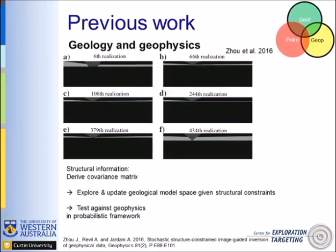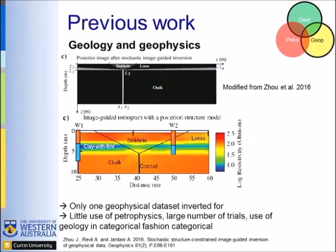Now these authors do consider geology. Zhu et al., published in 2016 in the April edition of Geophysics, assume they know more or less the topology of the geology and perturbate it through Monte Carlo simulations. They test it against geophysics by deriving a covariance matrix from each of these tests. As a result, they find this geometry to best fit the geophysics, and that is the imaging of the properties obtained after inversion using this coupling between geology and geophysics.